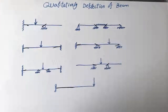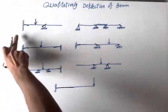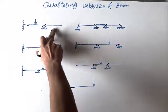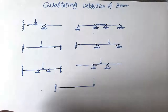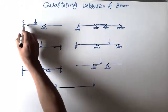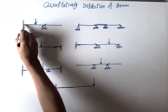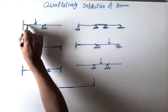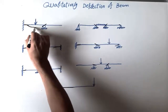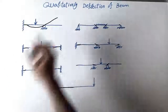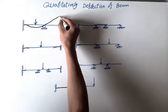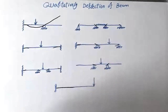First, we have a beam with one support fixed and the other end is overhanging, with a point load. How would the qualitative deflection shape look? The fixed part goes straight a little bit, then there is a curved part because the point load is acting downward, and then it goes up slightly. This is how the deflection shape looks for this beam.